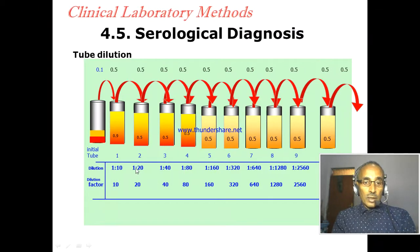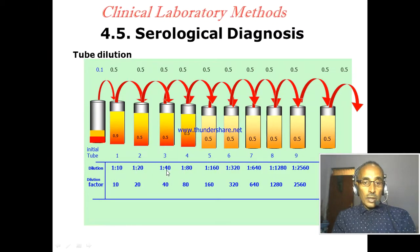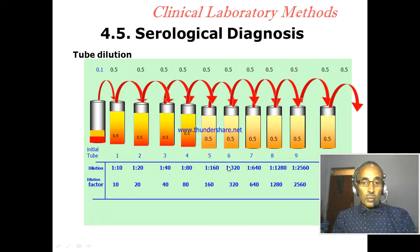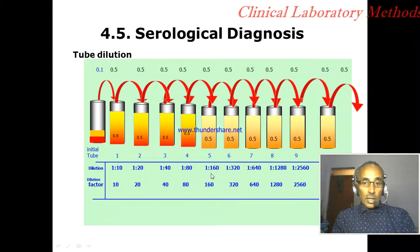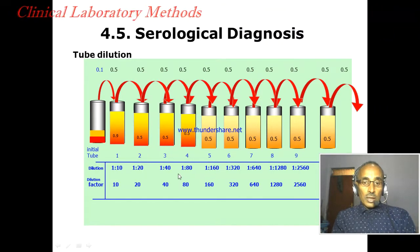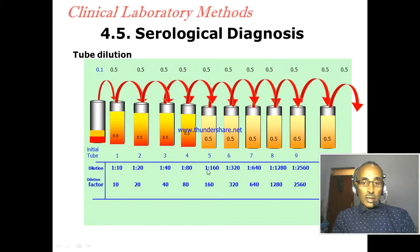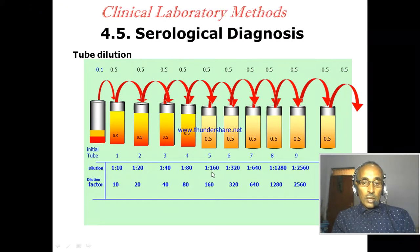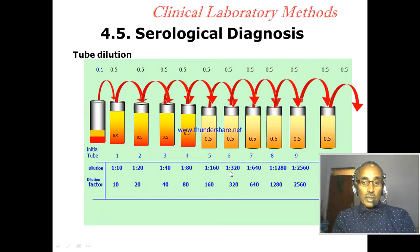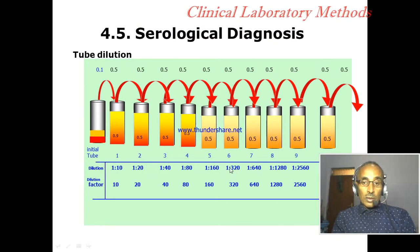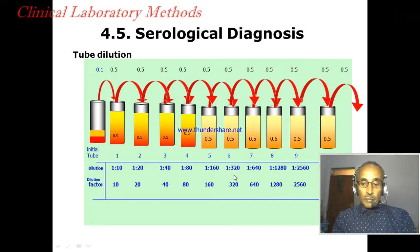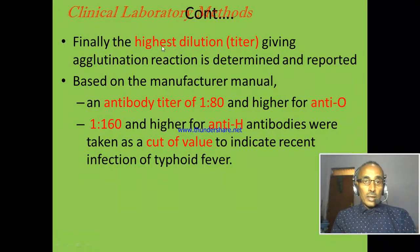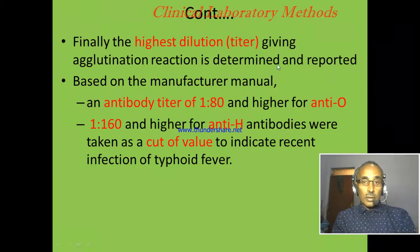If there is reaction at tubes 2, 3, 4, and 5 but not at tube 6, we report the final agglutination at tube 5. The titer at tube corresponding to 1:80 is 80, at 1:160 is 160, and at tube 6 it would be 320. The highest dilution giving agglutination is reported as the titer to estimate the amount of antibody.